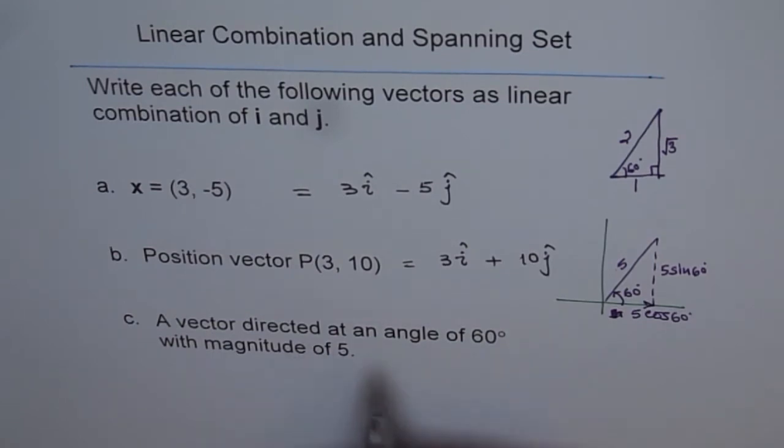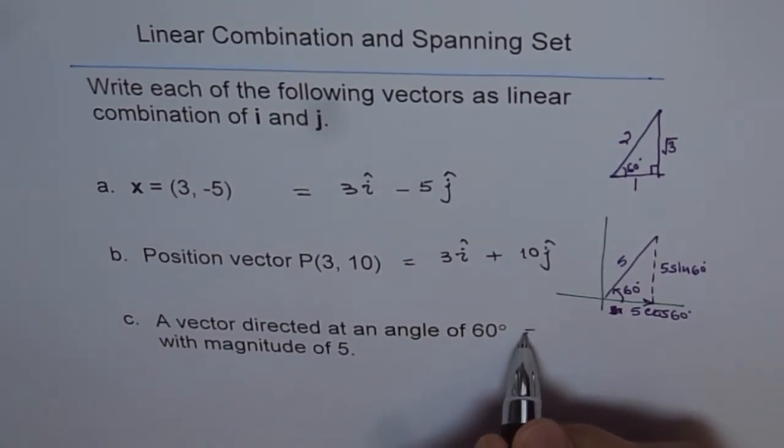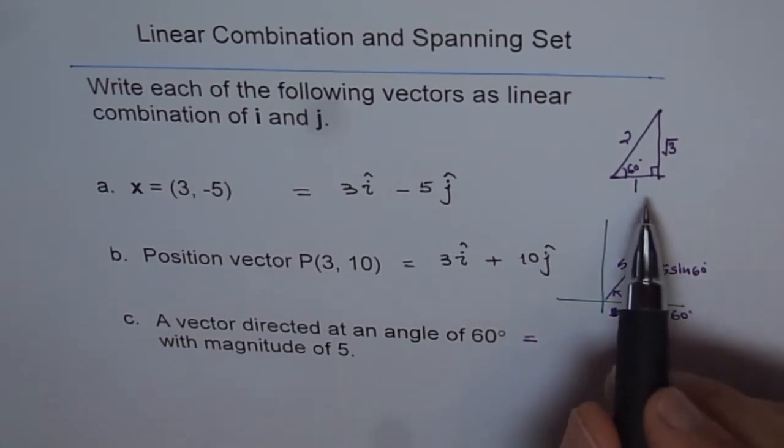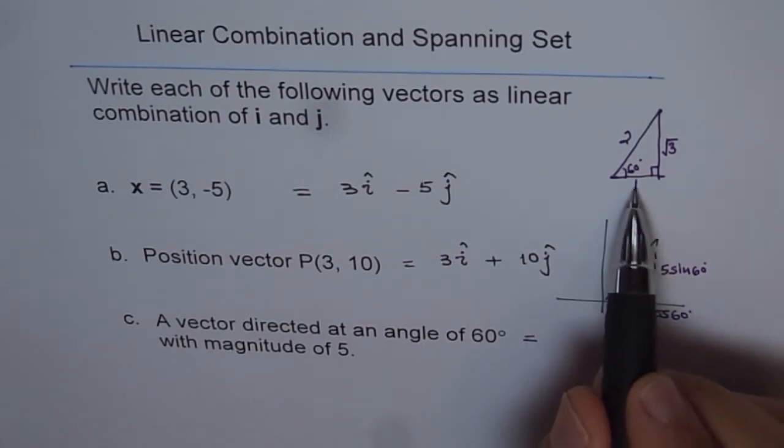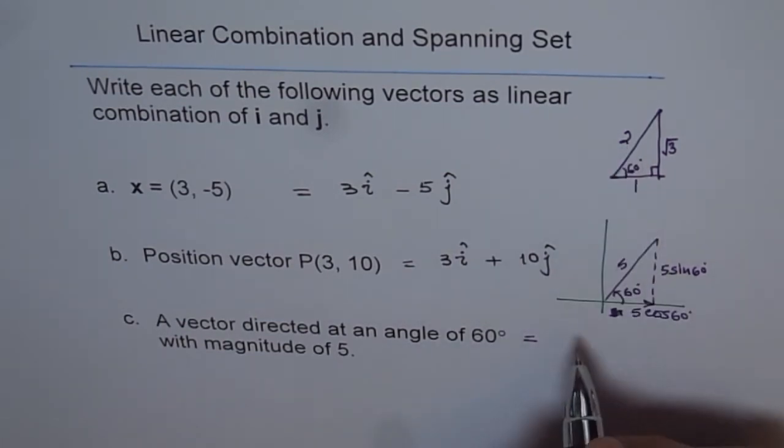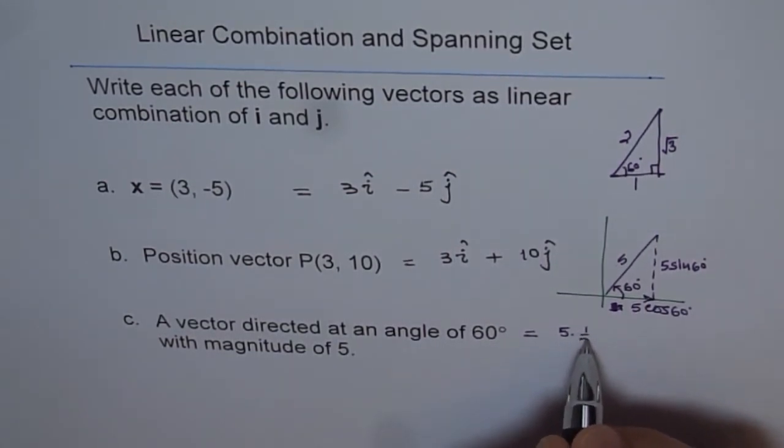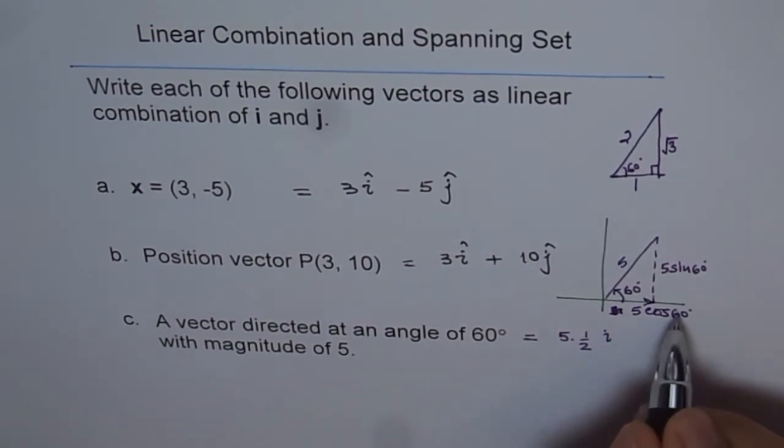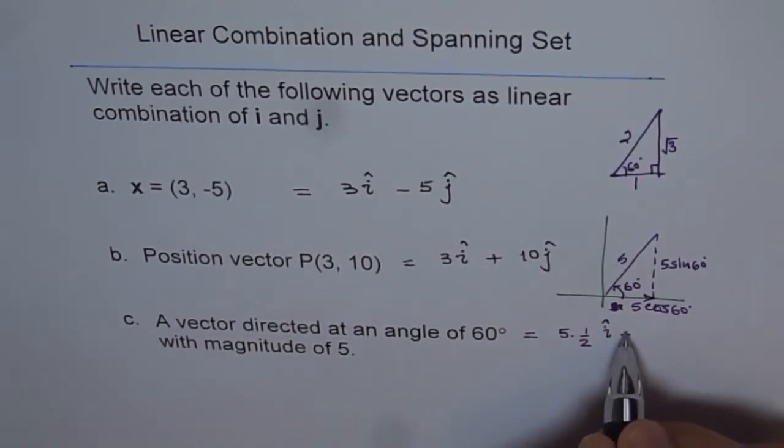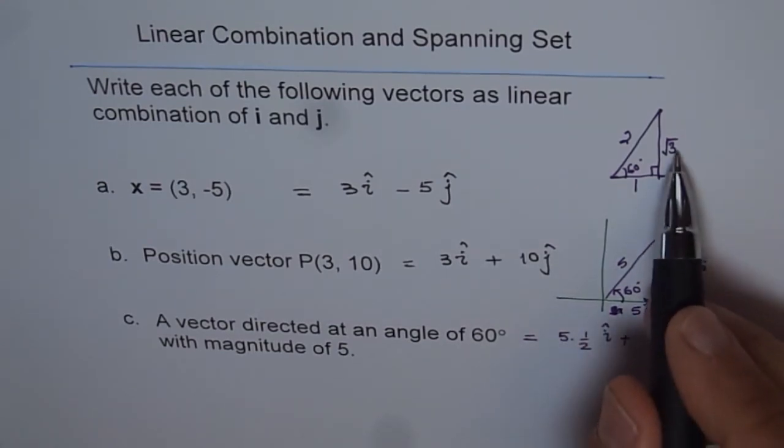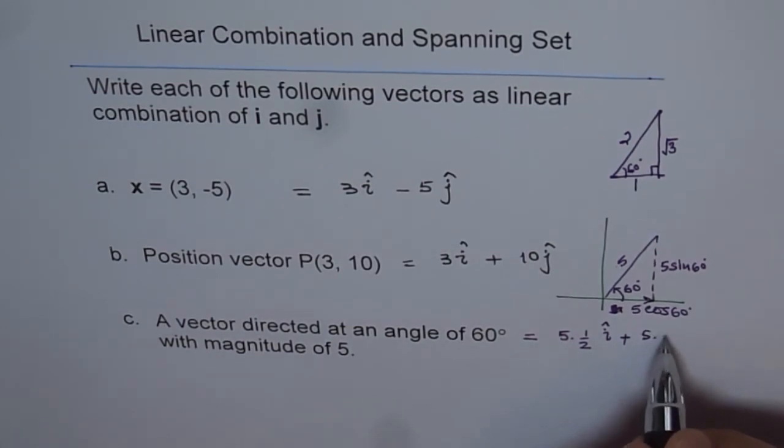So you can write this vector as equal to, the magnitude is 5 and the x component will be 5 cos of 60 degrees. Cos of 60 degrees is half. Adjacent over hypotenuse. So we can write this as 5 times cos of 60 degrees which is half i. This is along x-axis. Plus the vertical component is 5 sin 60 which is square root 3 over 2. So it is 5 times square root 3 over 2, j.